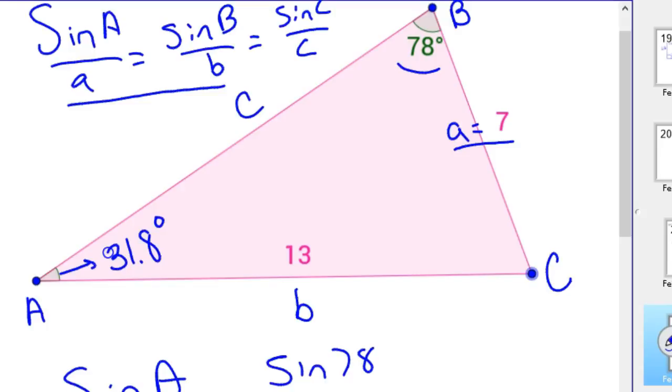So we know this is 31.8 degrees for that angle, which in actuality makes somewhat sense because I did draw this triangle proportionally. So then the next thing we could find is angle C.